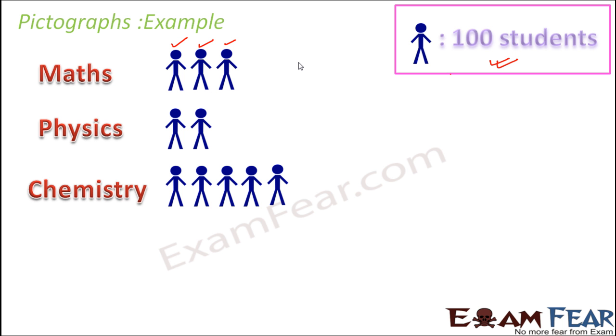Looking at this pictograph—this is basically a pictograph—if I ask you some simple questions like which subject is liked by most of the students, quickly, even without knowing whether maths is liked by 300, physics by 200, or chemistry by 500, just looking at this pictograph you can very quickly say that chemistry is the subject which is liked by most of the students.